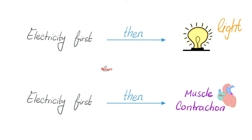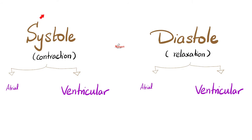When you turn on a light, electricity comes first and then the electrical filament emits light. Similarly, in your heart, electricity comes first — SA node, AV node, His-Purkinje system — and then your muscles actually contract. When your muscles contract, it is called systole. When your muscles are relaxed, it is called diastole. We have both atrial systole and ventricular systole.